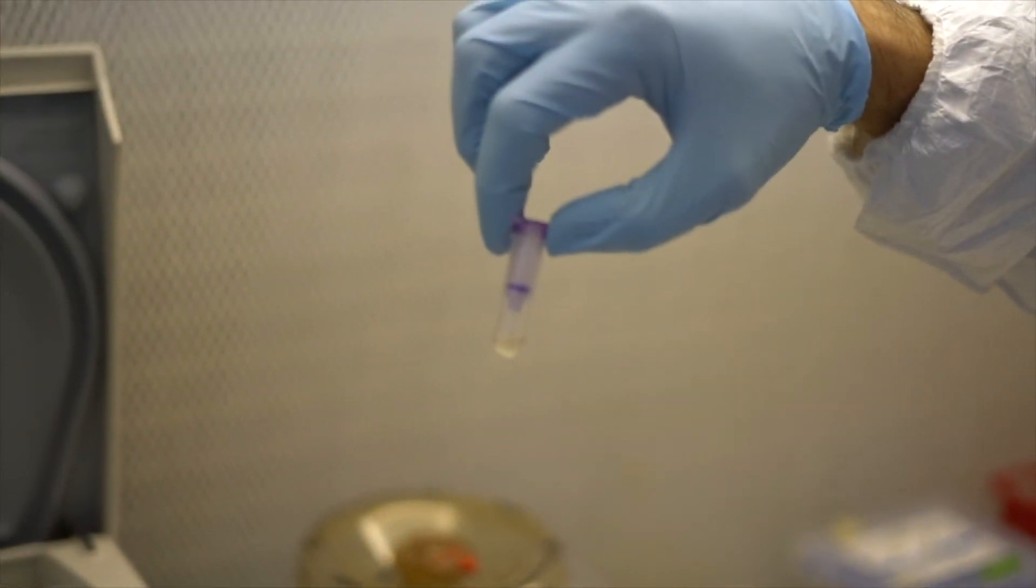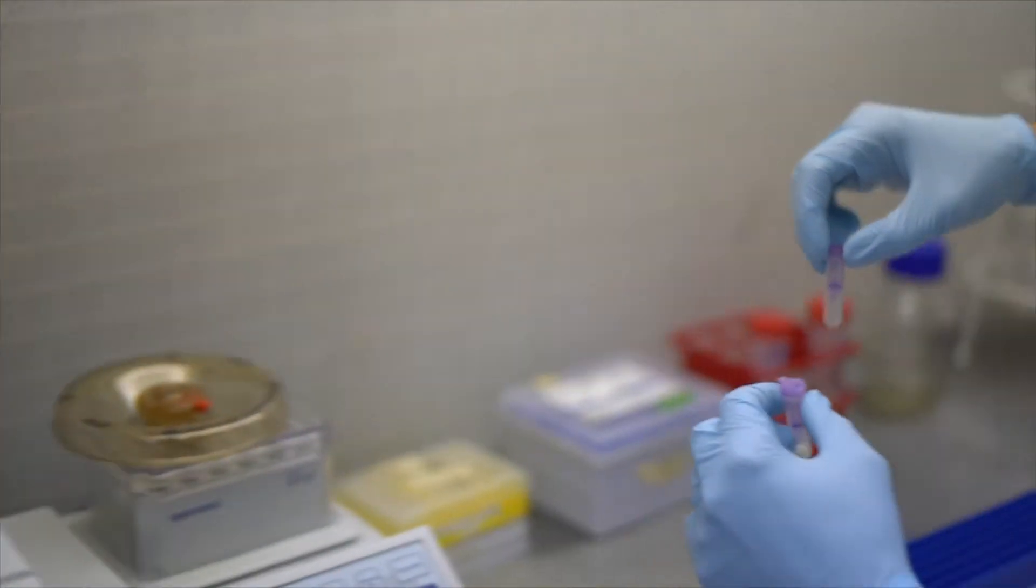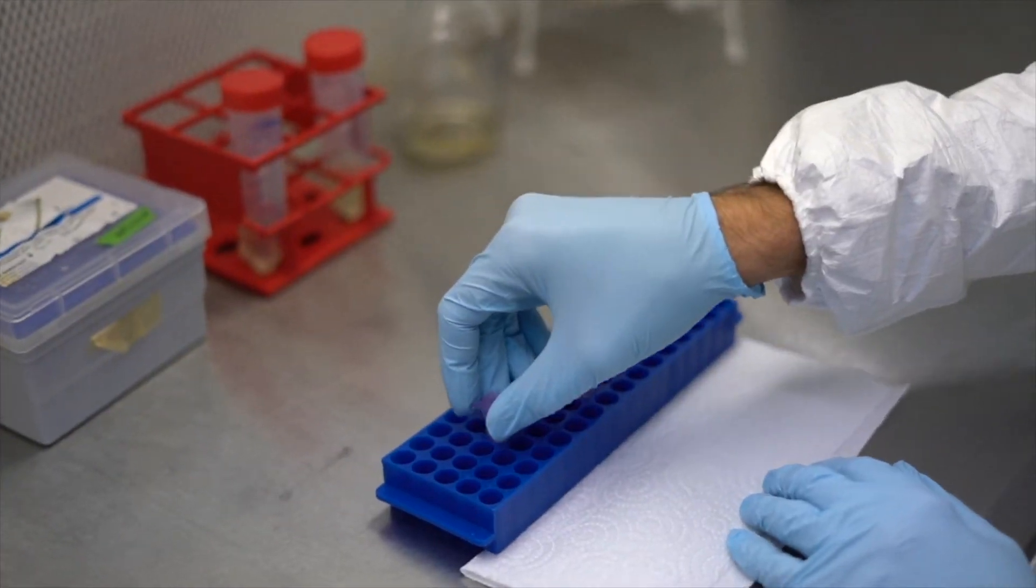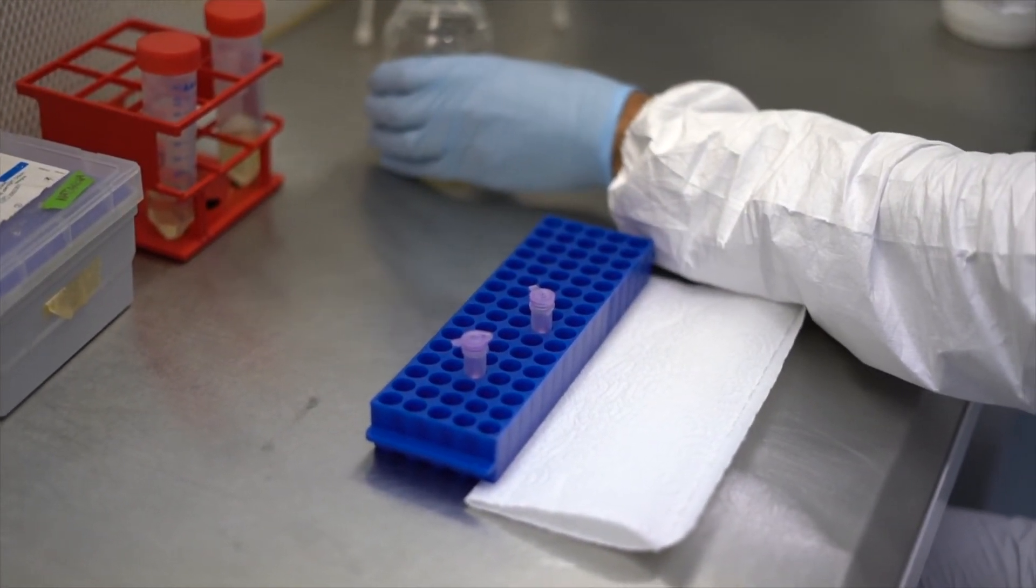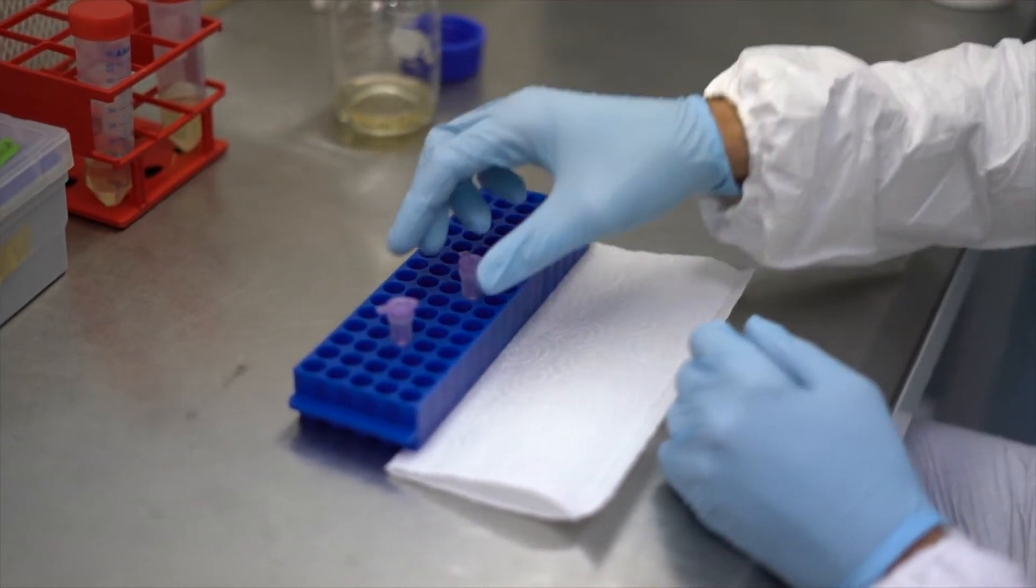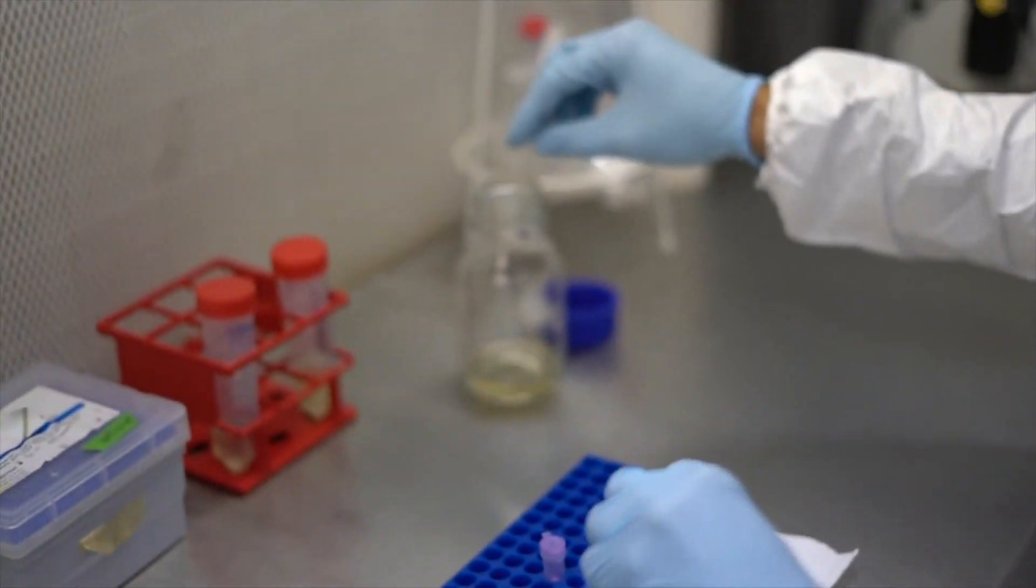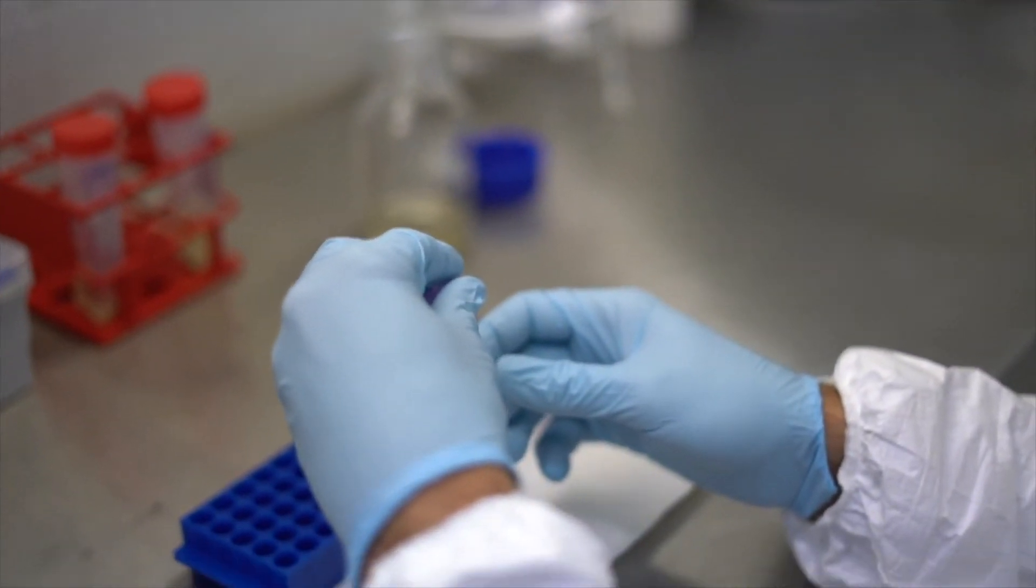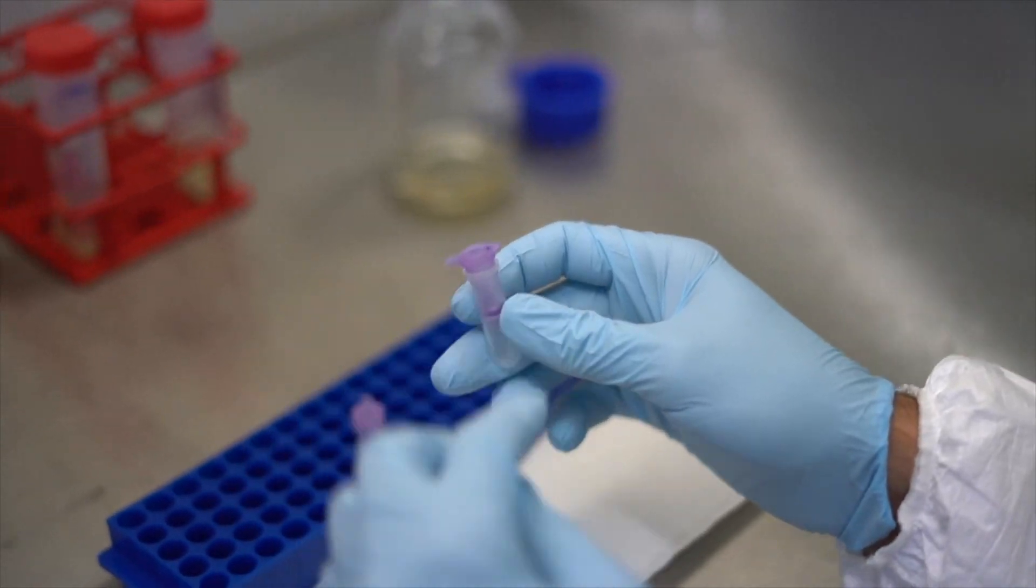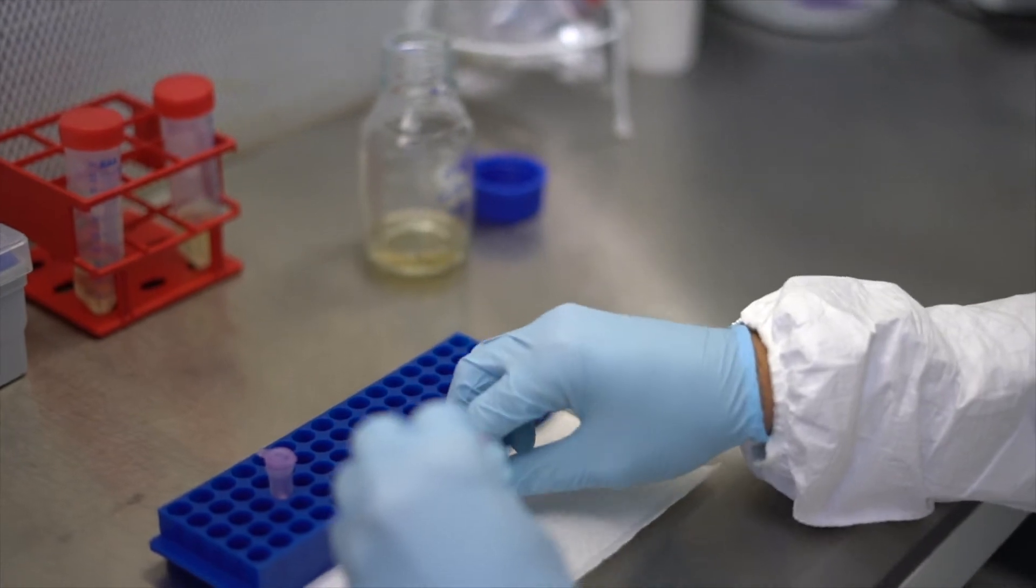Now everything has flowed through the MinElute column. We can get rid of this liquid waste. We have to collect this separately because it needs to be disposed separately. Placing the MinElute column back, being careful not to touch the collection tube.